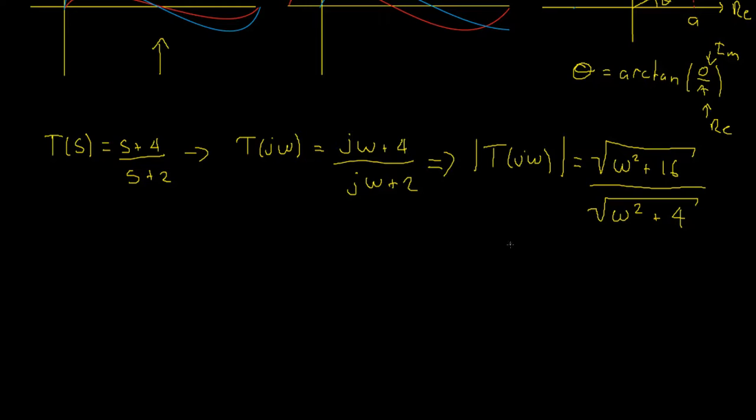Now, if we wanted to find the magnitude of an output signal at a given input frequency, we can simply sub in that frequency for omega. For instance, if we had an input signal of one radian per second, we could sub in one for omega, which would give the square root of 17 divided by the square root of five. Now, that would be roughly equal to 1.84.